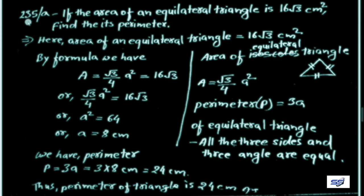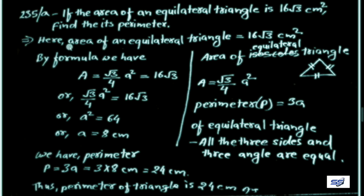Problem 235A: If the area of an equilateral triangle is 16√3 cm², find its perimeter. The area of an equilateral triangle is given as 16√3 cm². In an equilateral triangle all three sides are equal. We need to find the perimeter of the same triangle.